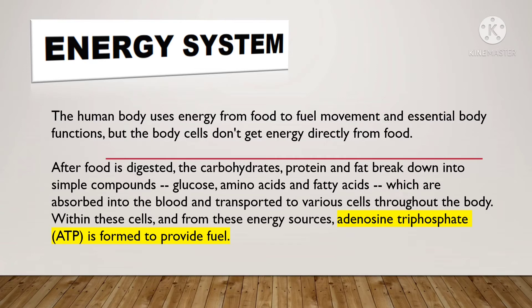The human body uses energy from food to fuel movements and essential body functions, but the body cells don't get energy directly from food. After food is digested, the carbohydrates, protein, and fat break down into simple compounds — glucose, amino acids, and fatty acids — which are absorbed into the blood and transported to various cells throughout the body. Within these cells, adenosine triphosphate, or ATP, is formed to provide fuel.